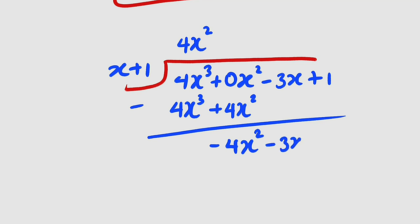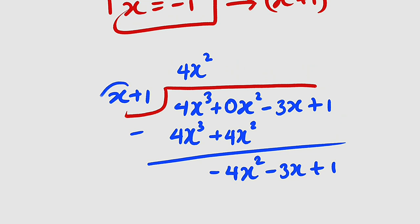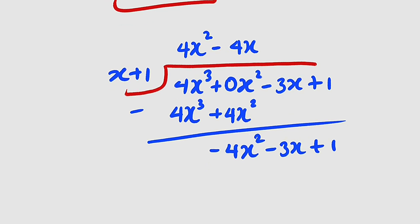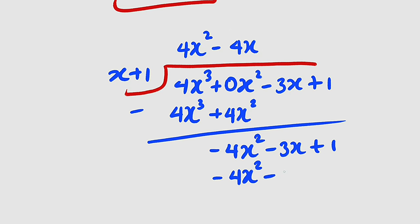Bring down negative 3x plus 1 and repeat. Dividing: x into negative 4x squared gives negative 4x. Multiply negative 4x by x plus 1 to get negative 4x squared minus 4x.